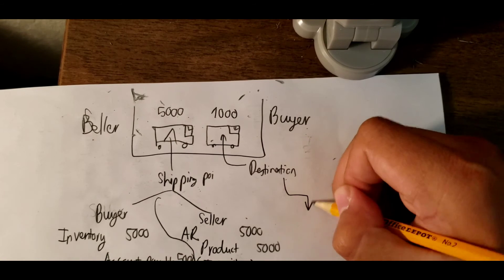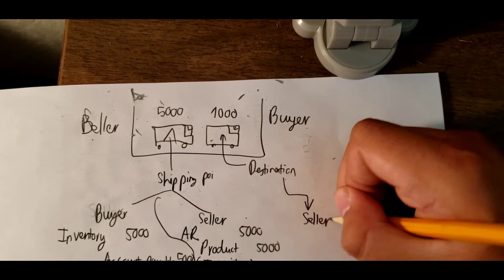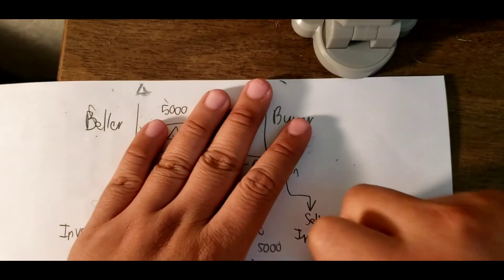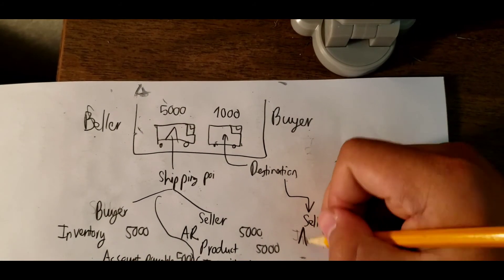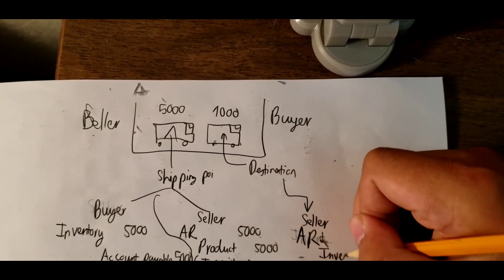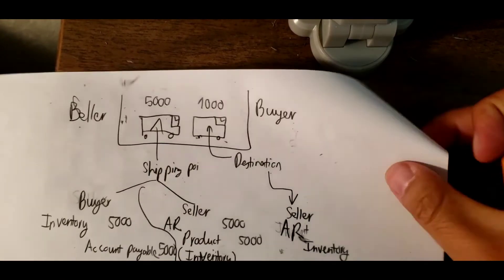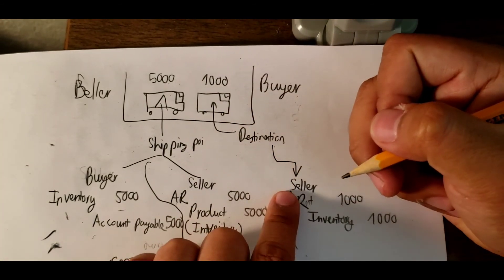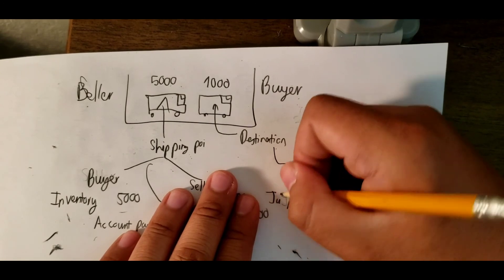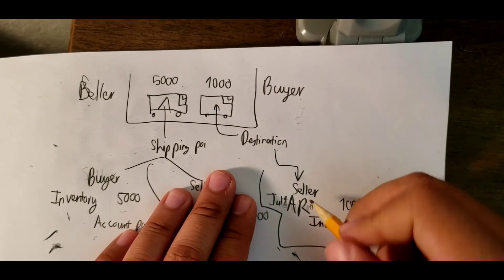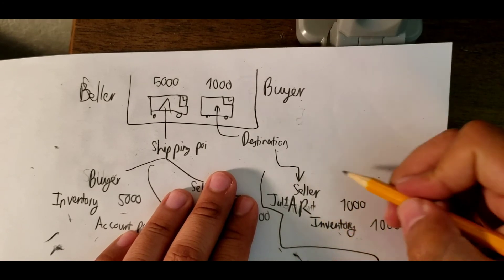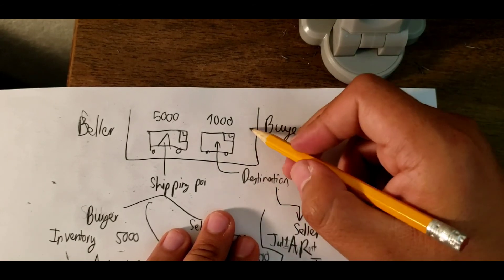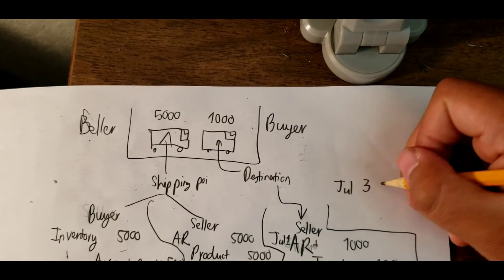For the destination point, the truck is in transit, so we only have the seller reporting. That is accounts receivable and inventory — it should be one thousand. For example, the seller sells on July 1st, so on July 1st only the seller reports about the destination. The buyer does not report yet.